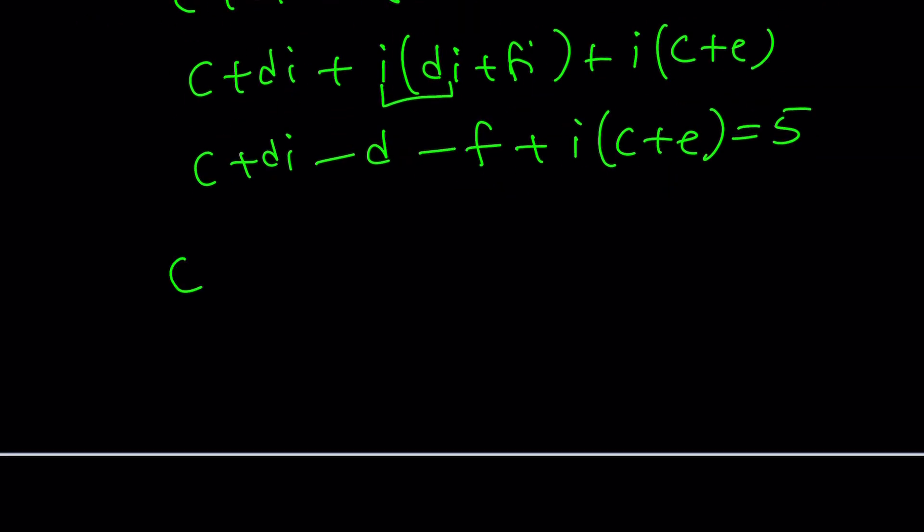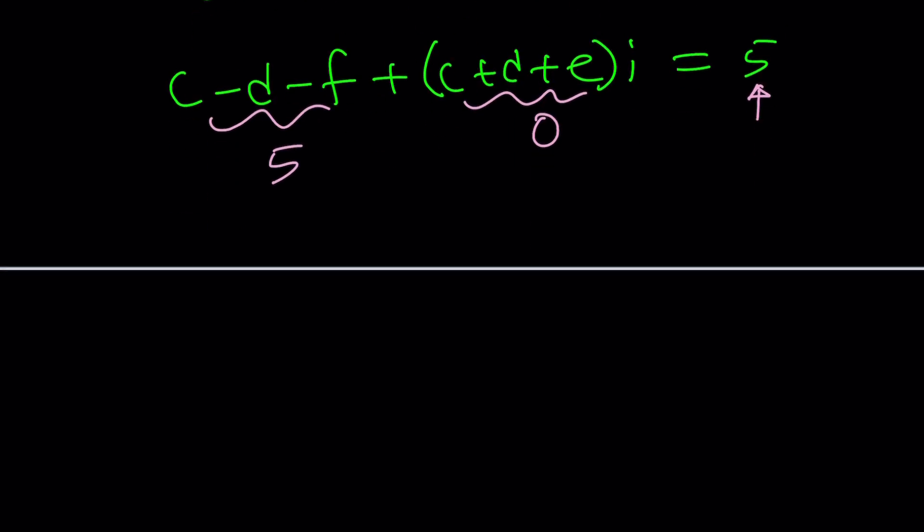We're going to put the real parts together, c minus d minus f, plus c plus e plus d, all multiplied by i, equals 5. Now, we can compare apples and apples, not apples and oranges, because now we have a complex number on either side, but there's no imaginary part here, so the coefficient must be 0, and this needs to be 5. That gives us a system of equations. Let's go ahead and try solving that.